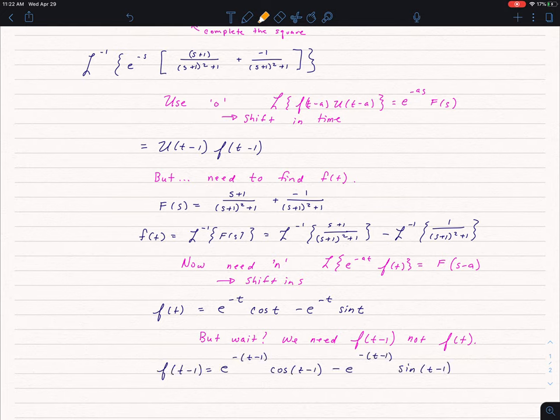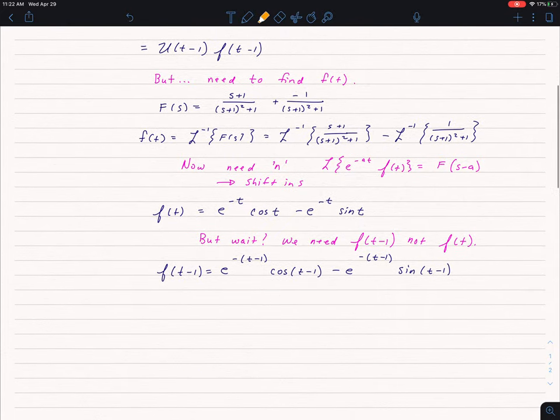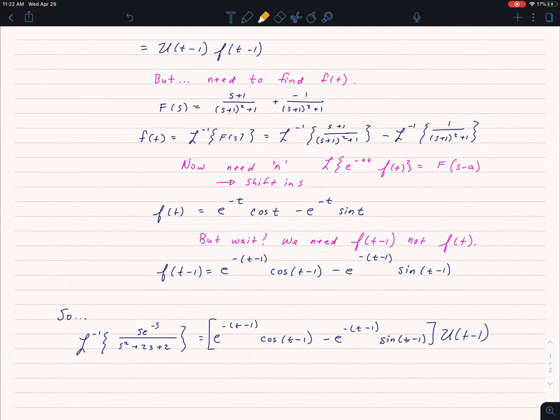So let's rewrite this as f of t minus 1. Anywhere I see a t, I'm going to replace it with a t minus 1. So I have my f of t minus 1, and I have my u of t minus 1. So that means the Laplace transform of s e to the negative s over s squared plus 2s plus 2 is equal to the quantity e to the negative t minus 1 cosine t minus 1 minus e to the negative t minus 1 sine of t minus 1 all times u of t minus 1.